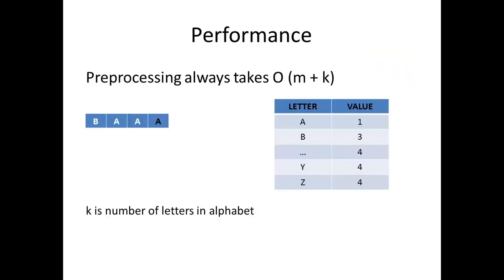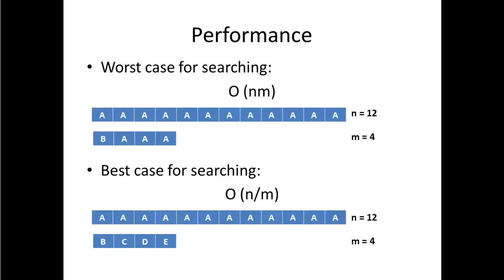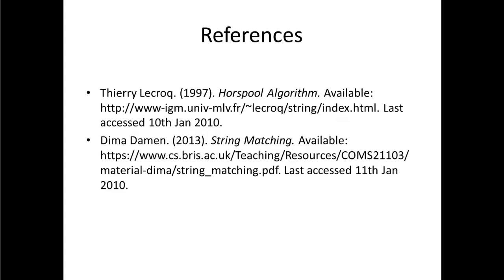This was the algorithm, let's talk a bit about its performance. So preprocessing always takes O of M plus K. And this is because, as you've seen in our pseudocode, we have two for loops, one going through all the letters in our alphabet and one going through all our letters in the pattern. As far as searching is concerned, the worst case for searching is big O of N times M. This happens when we have two strings which look like the two strings we have here. The best case for searching is big O of N over M, and that also happens with two strings that look like this. Thank you very much for watching, I hope this was a helpful tutorial.